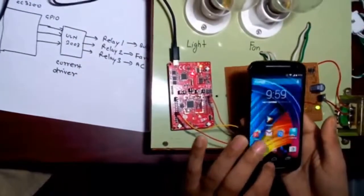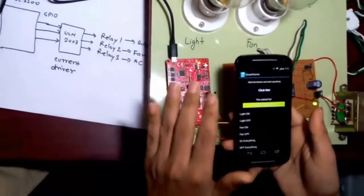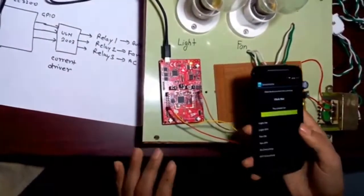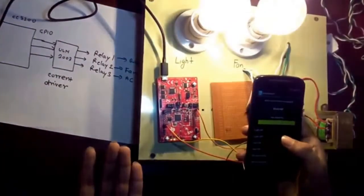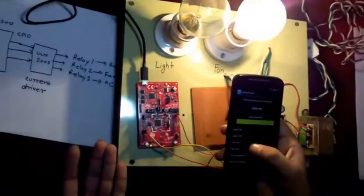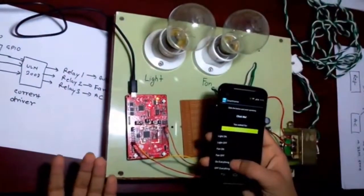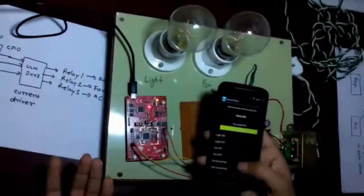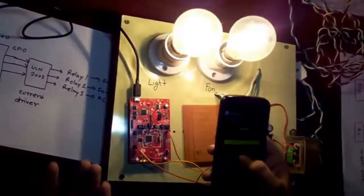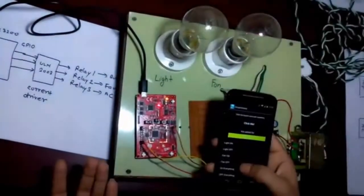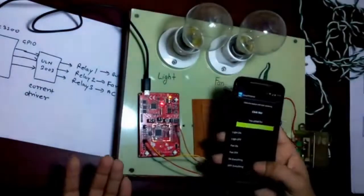Now this is my application with the name smartphone. This is the application. Now I can give the command: light on, fan on, light off, fan off, on everything, off everything. Light on, fan on, light off, fan off, on everything, off everything.